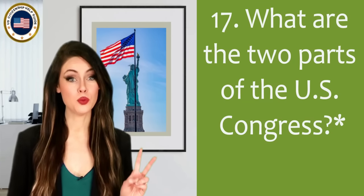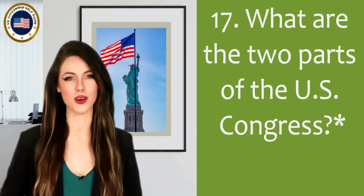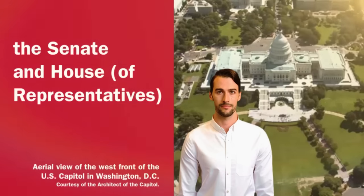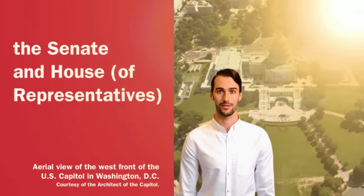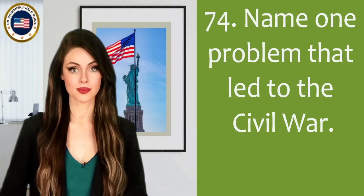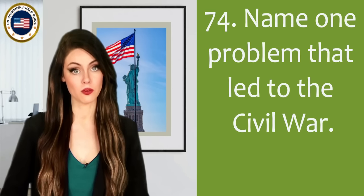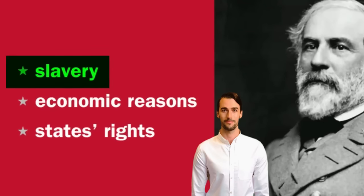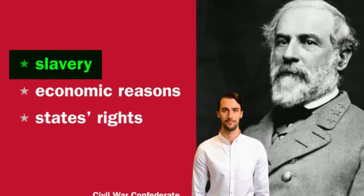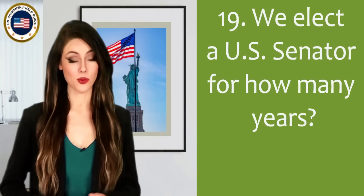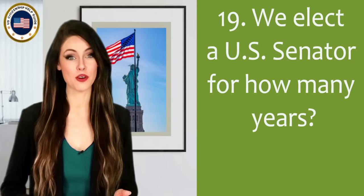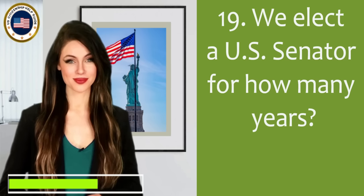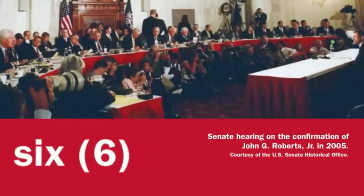What are the two parts of the U.S. Congress? The Senate and House of Representatives. Name one problem that led to the Civil War. Slavery. We elect a U.S. Senator for how many years? Six.